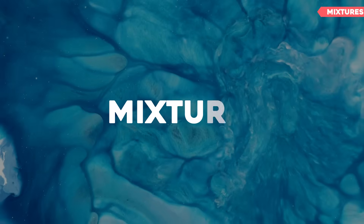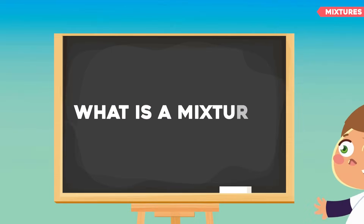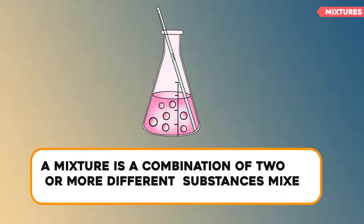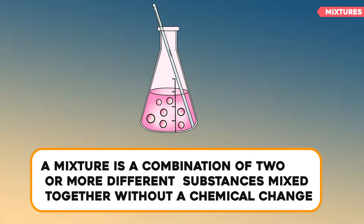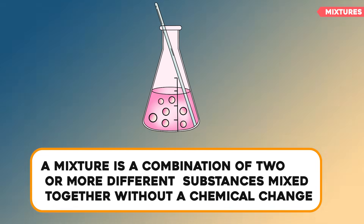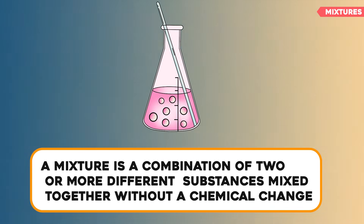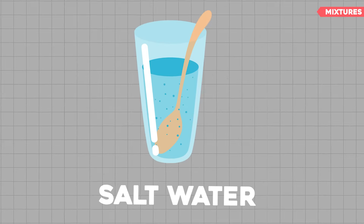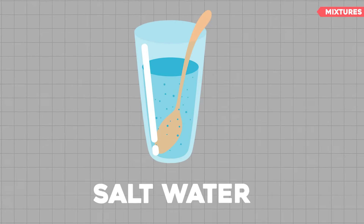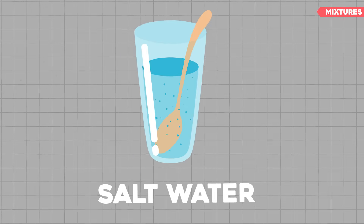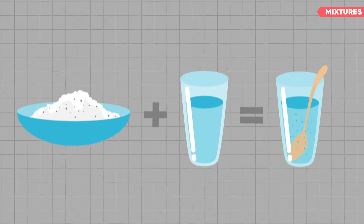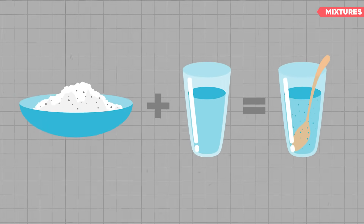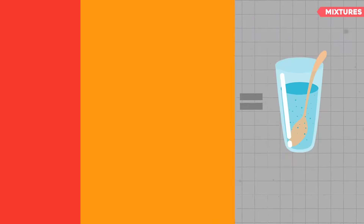Part 3: Mixtures. What is a mixture? A mixture is a combination of two or more different substances mixed together without a chemical change. For example, salt water is a mixture — you can mix salt and water together, but they don't chemically combine into something new.